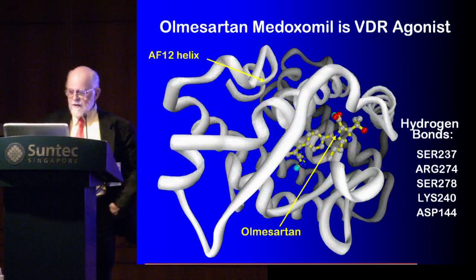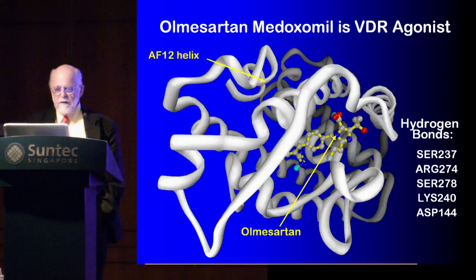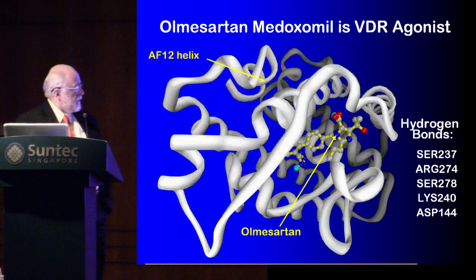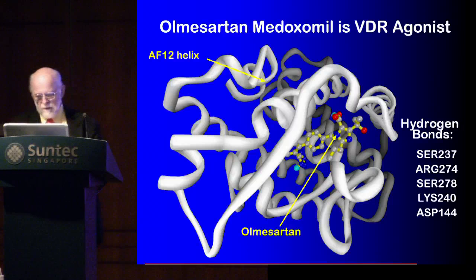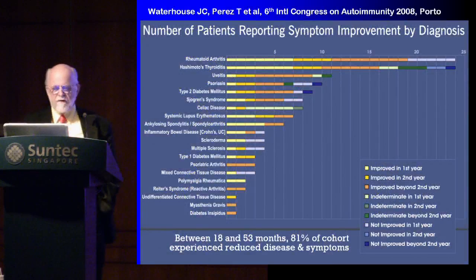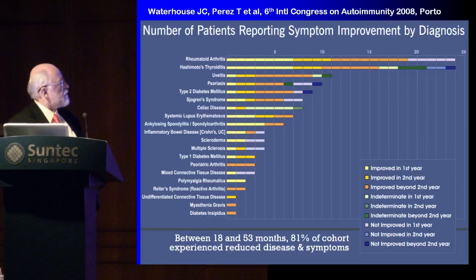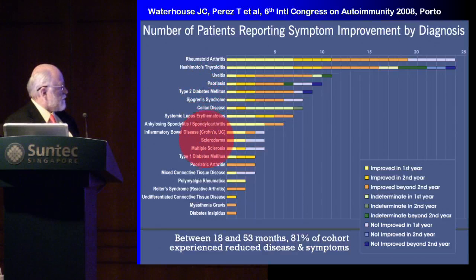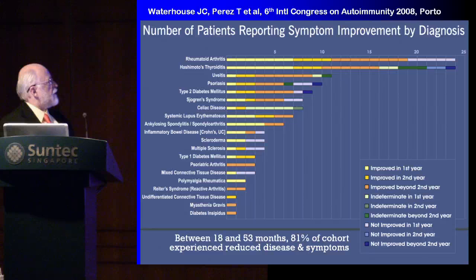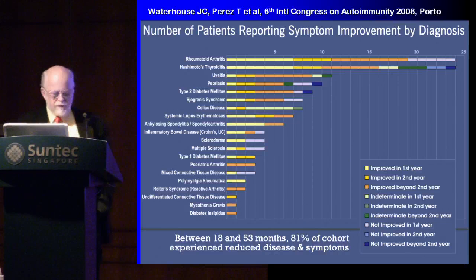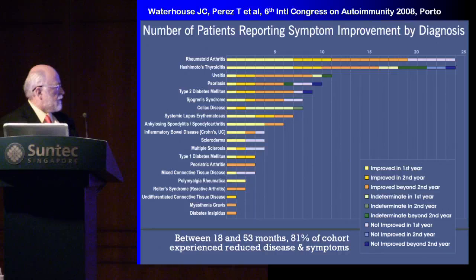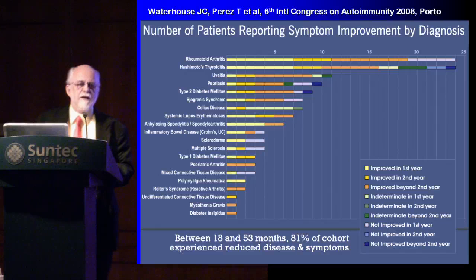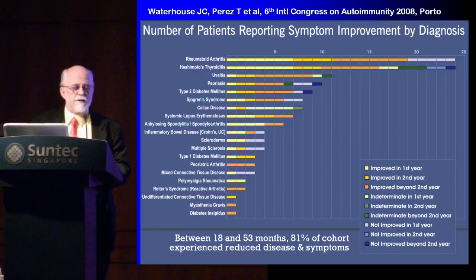So what do we do about it? We find a VDR agonist which will switch the VDR back on. It turns out there is a drug in the pharmacopoeia that will do that — Olmesartan Medoxomil. Over a period of about five years, you can reverse just about every autoimmune diagnosis — rheumatoid arthritis, Hashimoto's thyroiditis, uveitis, psoriasis, scleroderma, multiple sclerosis, right down to diabetes insipidus. Our study, reported by colleague Tom Perez in Porto last year, showed that between 18 and 53 months of therapy, 81% of the cohort experienced reduced disease and symptoms. When you give the VDR agonist, patients become sensitive to low-dose antibiotics again and the disease processes start to reverse.